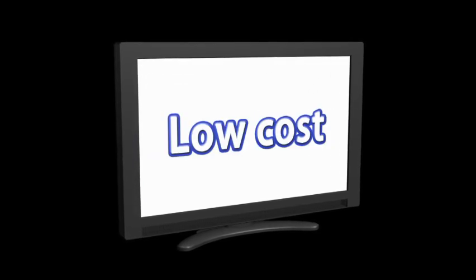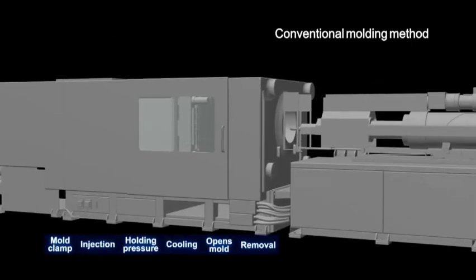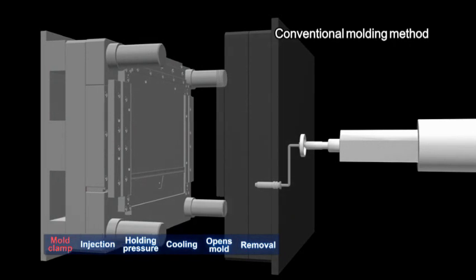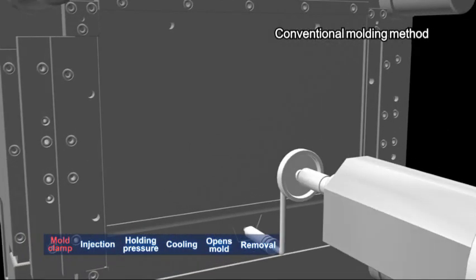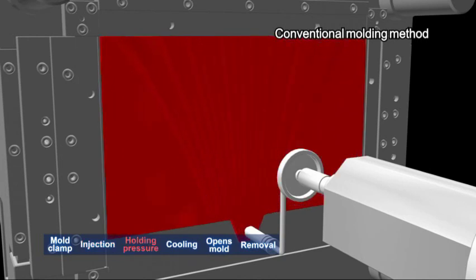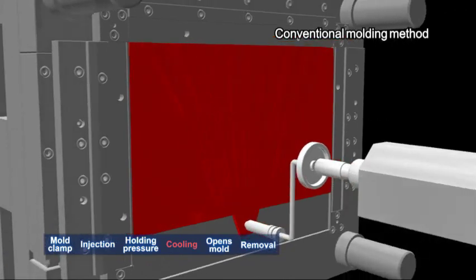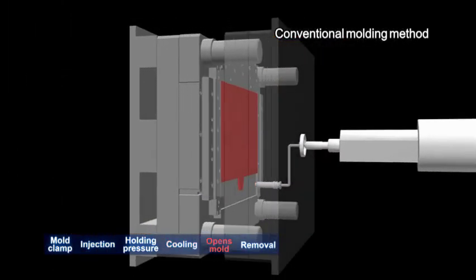Now we will show you the problems with the conventional molding method. In the conventional molding machine, the resin is injected radially at high pressure into a fixed mold to mold the light guide plates.